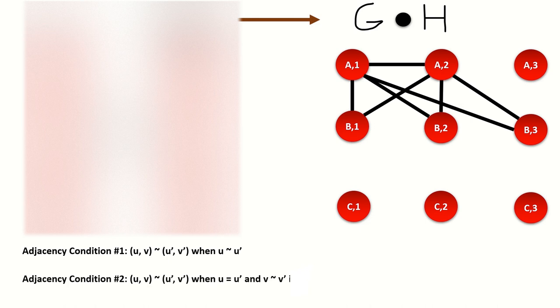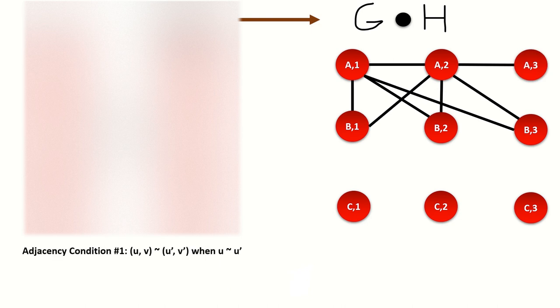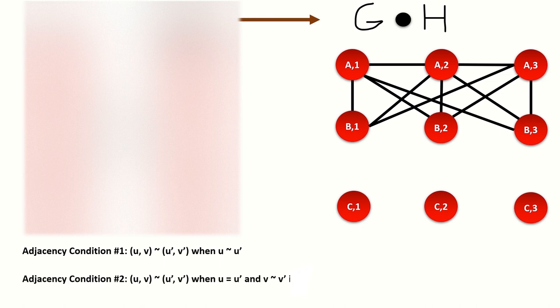By the second adjacency condition, a2 will connect to all vertices whose right entry is a vertex adjacent to vertex 2 in graph h, and whose left entry is still a. Now for vertex a3: by the first adjacency condition, a3 will connect to all vertices whose left entry is adjacent to vertex a in graph g, meaning all vertices whose left entry is b. And by the second adjacency condition, a3 will connect to all vertices whose right entry is adjacent to vertex 3 in graph h and whose left entry is still a, meaning that it will connect to a2.